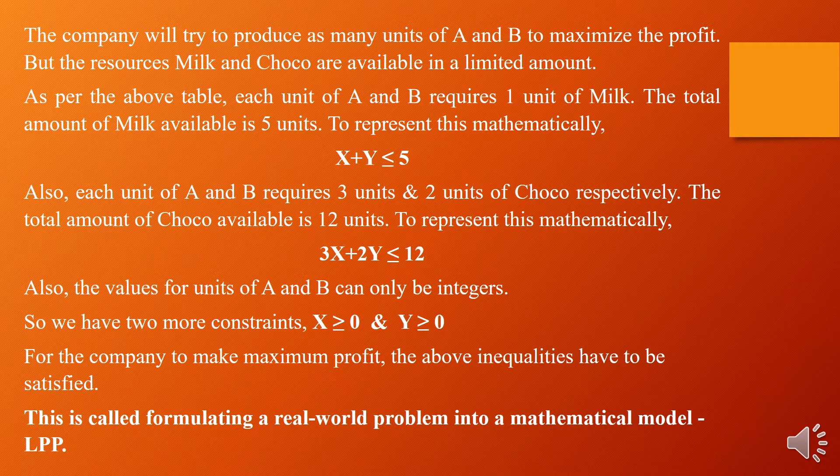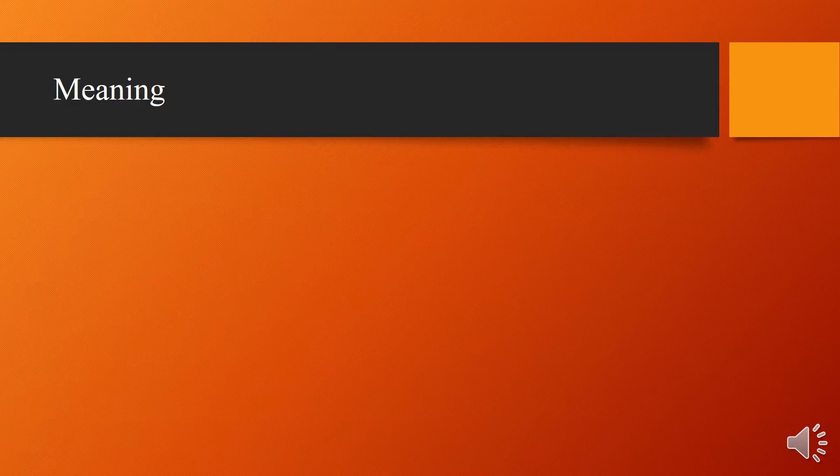The values for units A and B can only be non-negative integers, so X ≥ 0 and Y ≥ 0. For the company to make maximum profit, the above inequalities have to be satisfied. This is called formulating a real-world problem into a mathematical model, and that we call a programming problem.